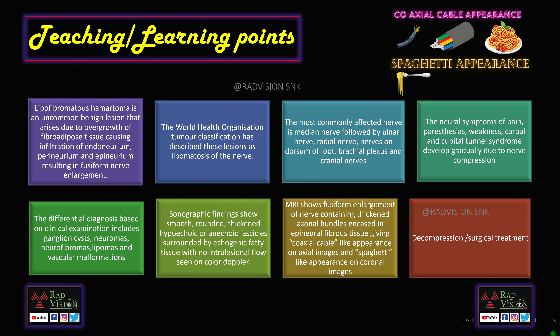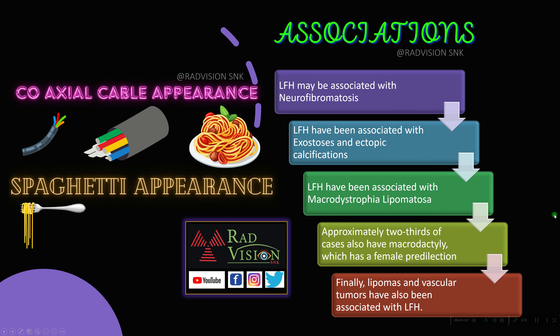Sonographic findings show smooth, rounded, thickened hypoechoic-to-anechoic fascicles surrounded by echogenic fatty tissue, and usually there is no flow on color Doppler. MRI shows fusiform enlargement of the nerve containing thickened axonal bundles encased in epineural fibrous or fibro-fatty tissue, giving the classical coaxial cable appearance on axial sections and spaghetti appearance on coronal sections. Treatment is conservative; sometimes surgical decompression is necessary.